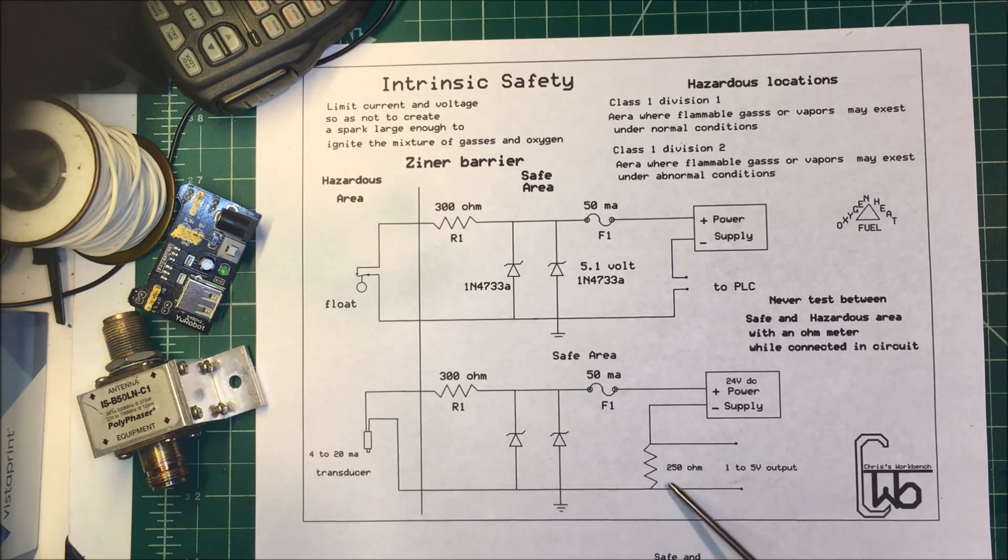Now if we put 4 milliamps across a 250 ohm resistor we get 1 volt out, and if we put 20 milliamps across that resistor we'll get 5 volts out. So we use this 1 to 5 volt signal and put that into our PLC to control whatever we're controlling for our pressure.